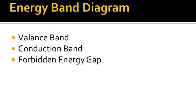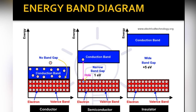Energy band diagram: the valence band is the outermost band completely filled with electrons, meaning all states are occupied. The conduction band is the next highest band above the valence band — it is empty or partially filled and is occupied by free electrons responsible for conduction. The forbidden energy gap is the difference in energy between the valence band and the conduction band.